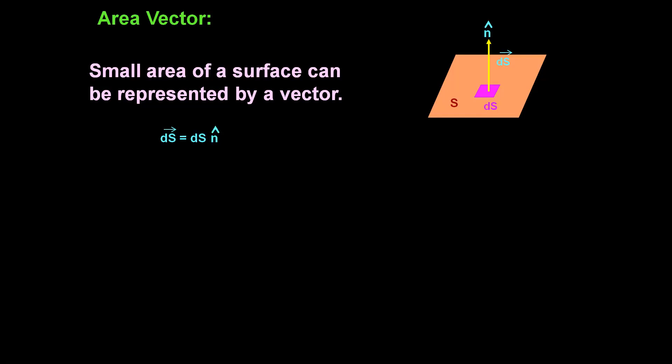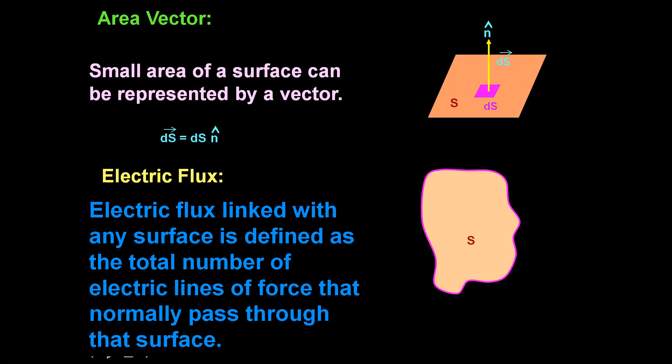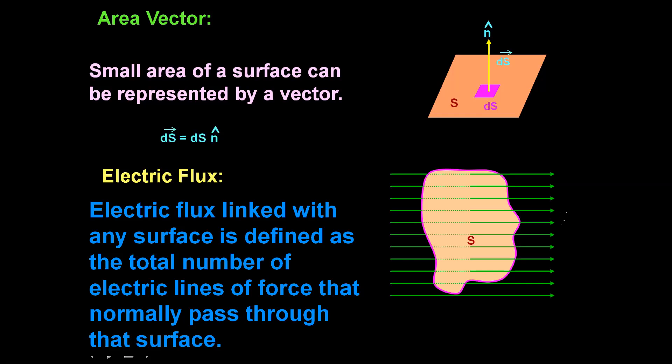Now we are ready to start studying what is electric flux. The physical meaning of electric flux is: it is the total number of electric lines of force that normally pass through a given area. We have discussed electric lines of force and its properties in a previous video — please visit the channel to watch it. Here, I'm considering an arbitrary closed surface — it could be spherical, cylindrical, cubical, any closed surface. The flux is calculated by finding the number of lines of force passing through that given area.